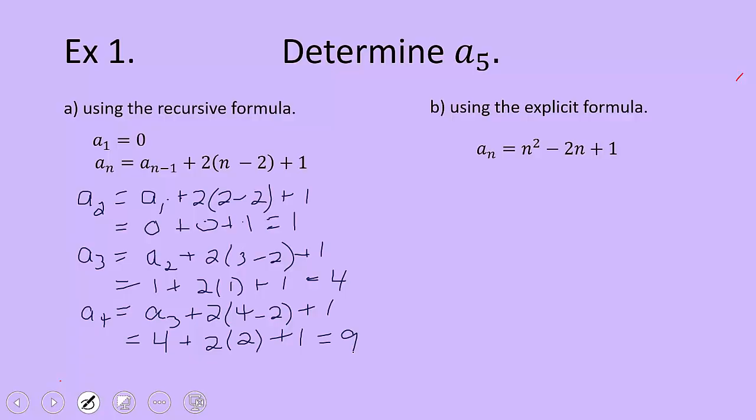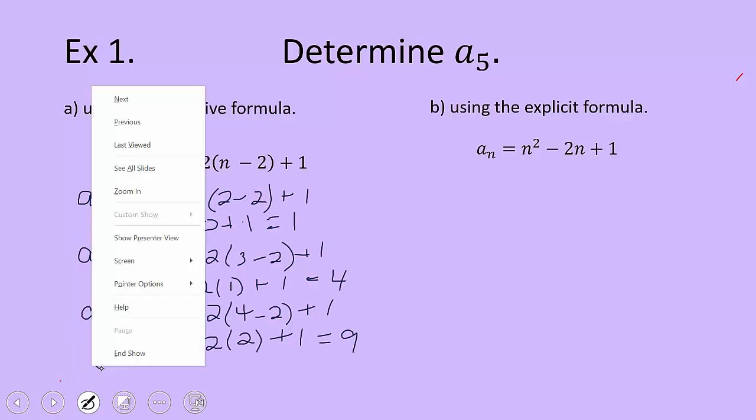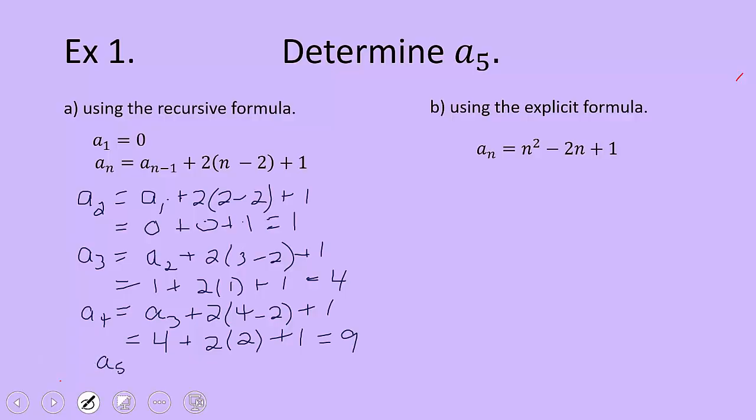And now finally, because we know the fourth term, we have enough to find the fifth term. It's based on the fourth term. And we have to plug in a 5 for n. And what was the fourth term? 9. And we'll just finish our arithmetic here. What is that? 9 + 6 is 15 + 1 is 16. So that took a lot of space, obviously, on the screen, it took time to come up with that.